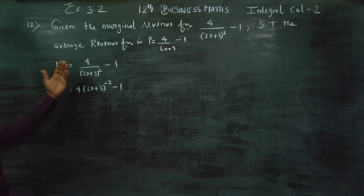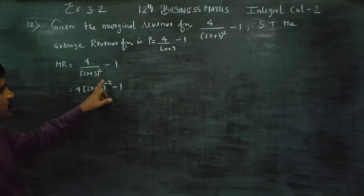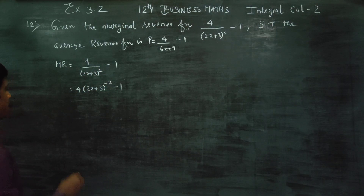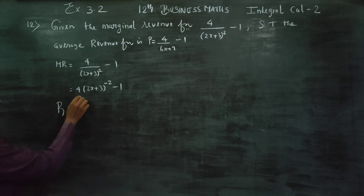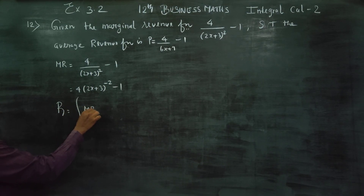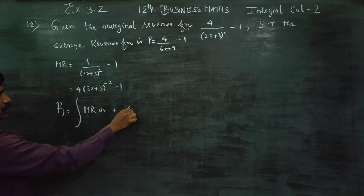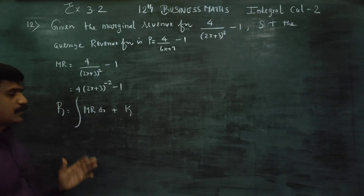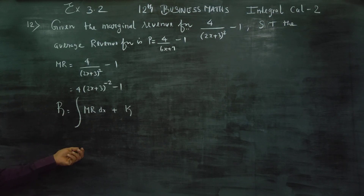If I say this is the integration, it's easy to say the power becomes minus 2 plus 1. Now, Revenue equals the integration of MR dx plus k — this is the formula. Integration of marginal revenue gives you revenue.